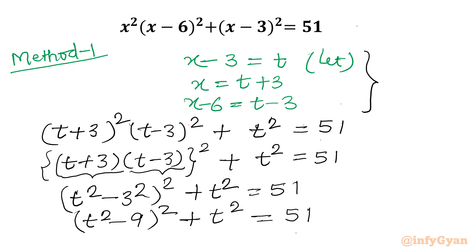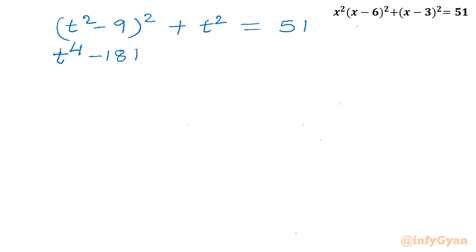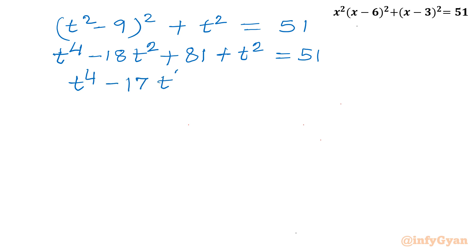Let us apply the (a-b)² identity. So I will write (t²)² minus 2×9×t² plus 9² plus t² equals 51, giving t⁴ minus 18t² plus 81 plus t² equals 51. Simplifying: t⁴ minus 17t² plus 30 equals 0. This is one quadratic equation in t².